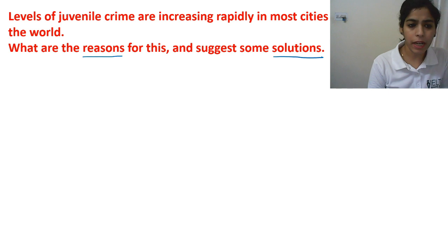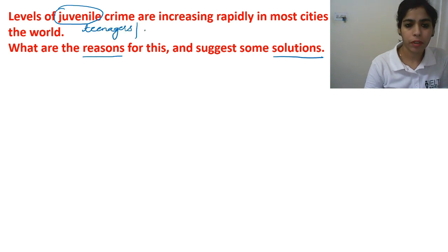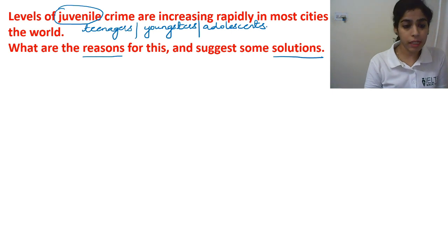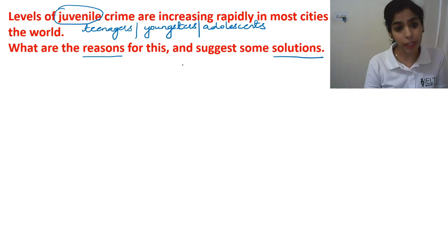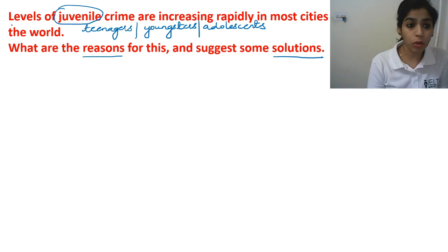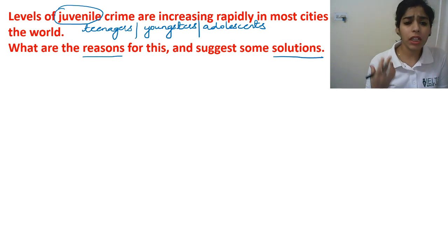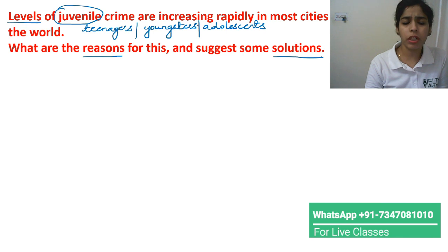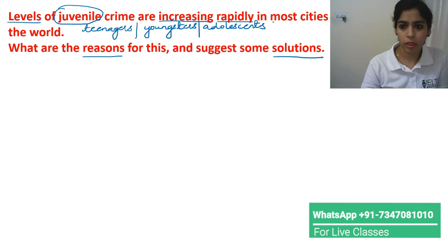Levels of juvenile crime — juvenile refers to teenagers, youngsters, and adolescents. So when teenagers and adolescents commit crimes, that is known as juvenile crime. The question says levels of juvenile crime are increasing — meaning more and more young people have indulged themselves in various crimes. We underline: increasing rapidly in most cities around the world.